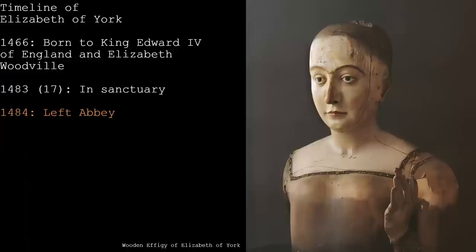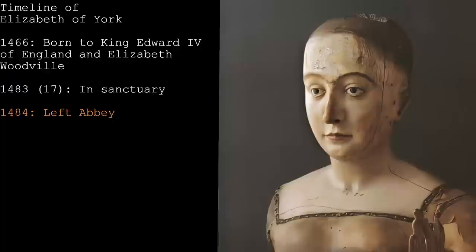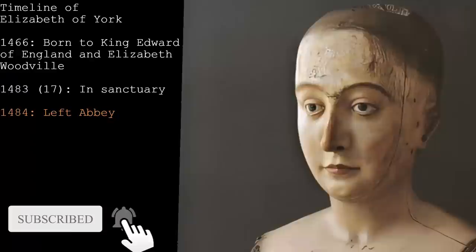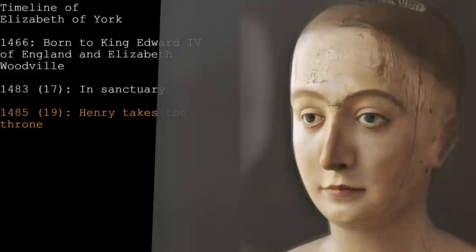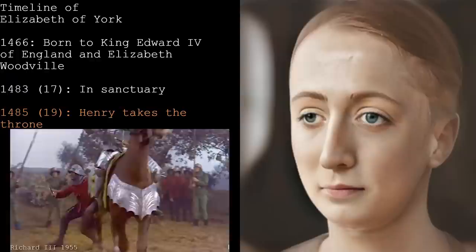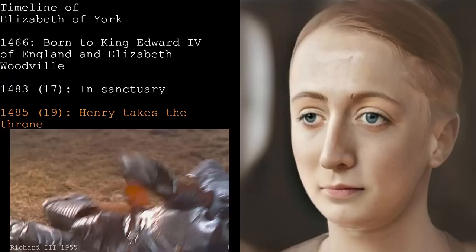In the meantime, Elizabeth Woodville left the abbey with her children in March 1484 and reconciled with Richard the Third. Whether she did it for show or to have a semblance of life, who knows — but it was rumored that Richard wanted to marry his niece Elizabeth of York. However, we know she was promised to Henry. In August 1485, Henry landed in Wales and took on Richard, who had the larger army. However, Richard was betrayed by one of his retainers and died in battle. Henry won and got the throne.